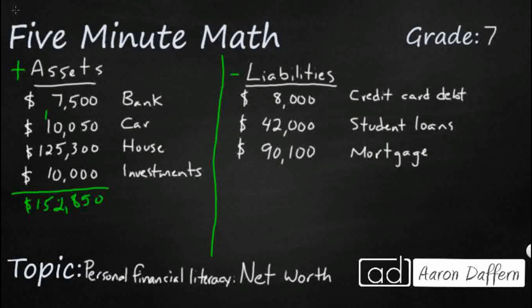Now, liabilities — think of these as negative. These are things that if everyone were to take their money from you that you owe them, you would have to pay out. So you might owe $8,000 in credit card debt, $42,000 in student loans from college. And your mortgage is what you're paying on your house, because unless you've got enough cash, you're borrowing from the bank. So if you sold your house for $125,000, you'd still have to pay back $90,000 to the bank.